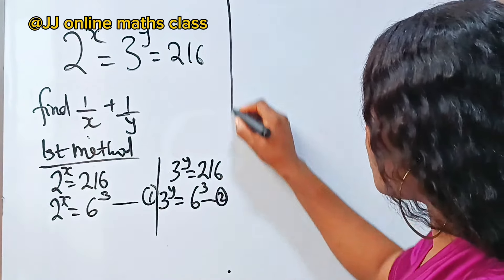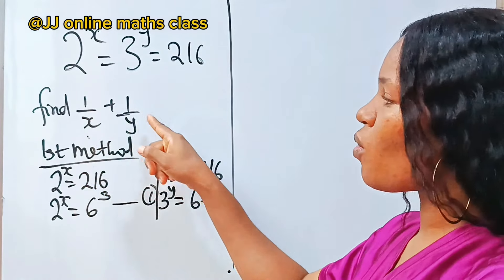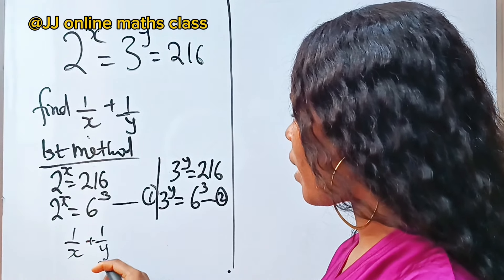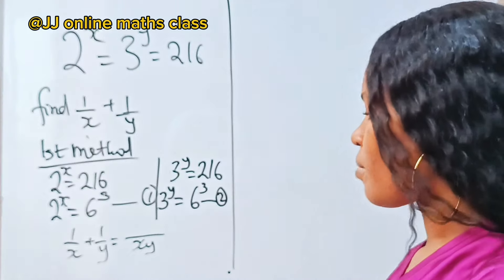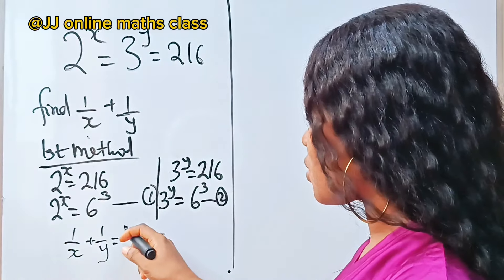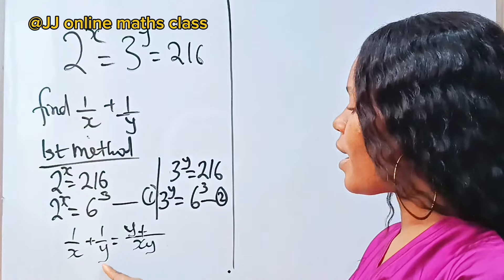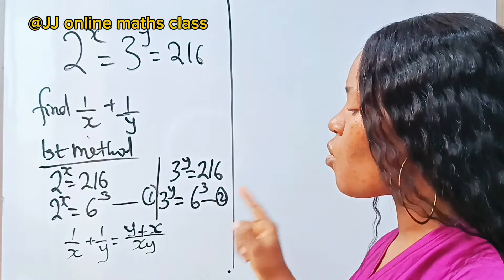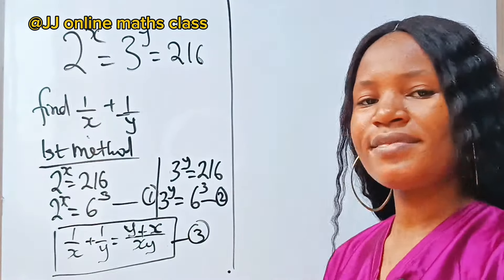Before proceeding, let's add 1/x plus 1/y together to see what we are expecting. The common denominator of x and y is xy. So 1/x + 1/y equals y plus x over xy. This means that 1/x + 1/y equals (x + y) over xy. Let's keep this aside as equation three.